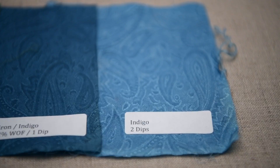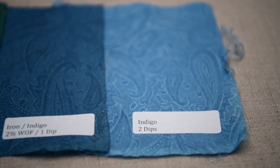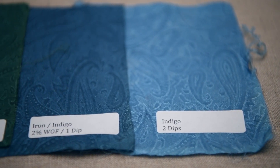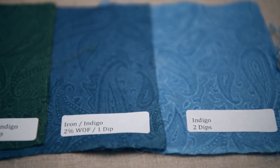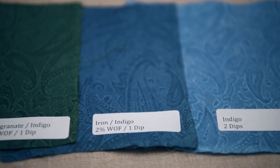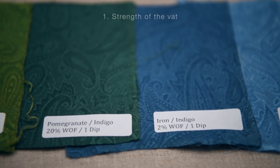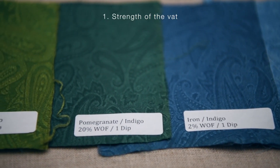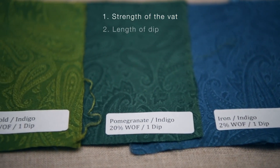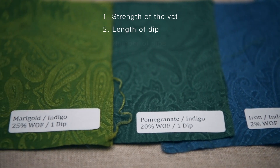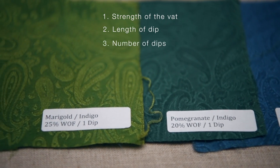When don't we use weight of fiber? For indigo. For indigo, we control the depth of shade by balancing three factors: the strength of the vat, the length of the dip, and the number of dips.